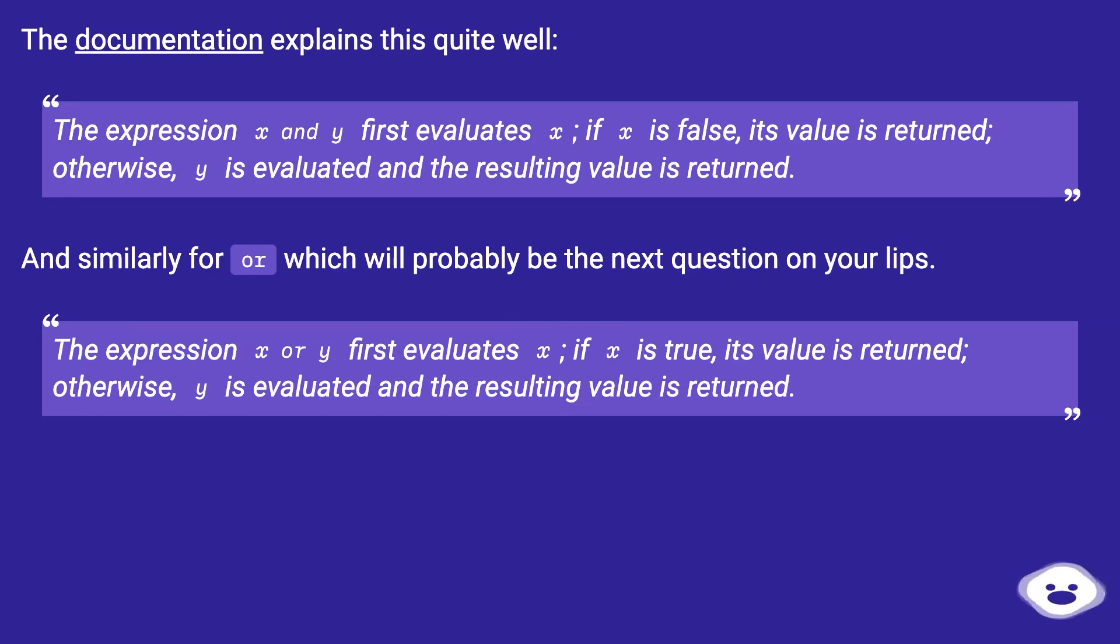And similarly for or, which will probably be the next question on your lips. The expression x or y first evaluates x. If x is true, its value is returned; otherwise, y is evaluated and the resulting value is returned.